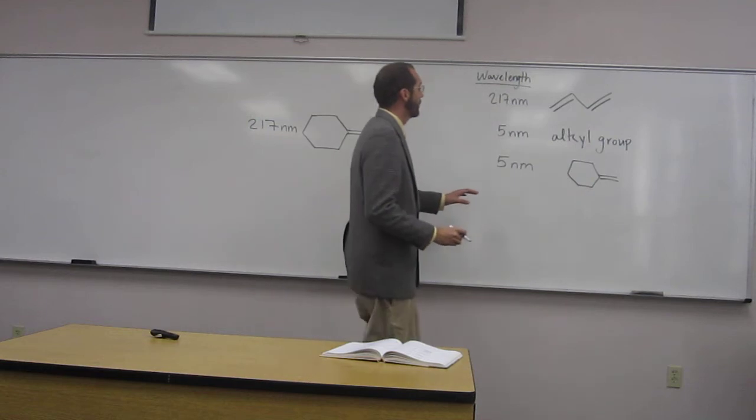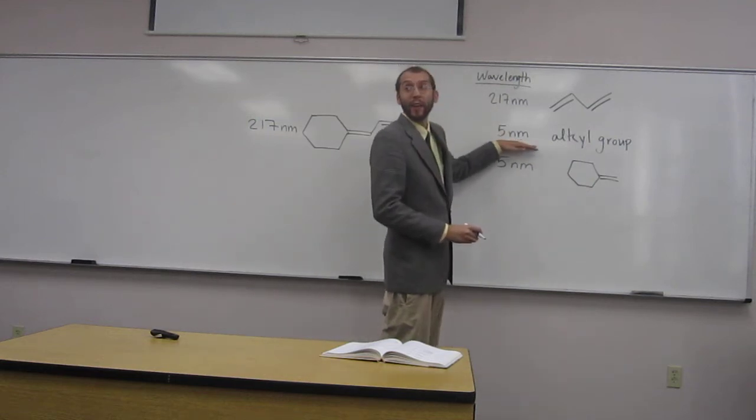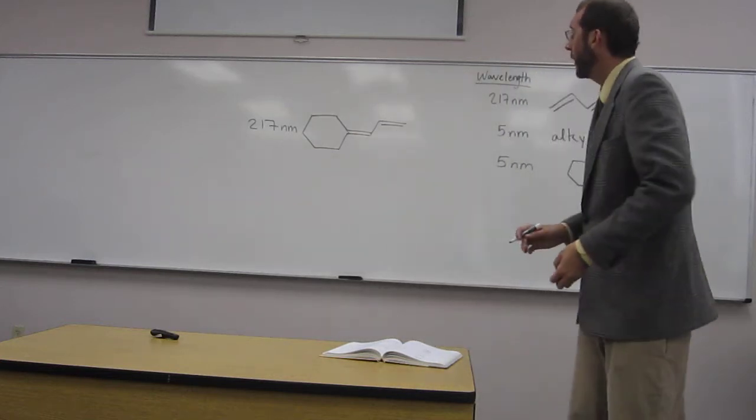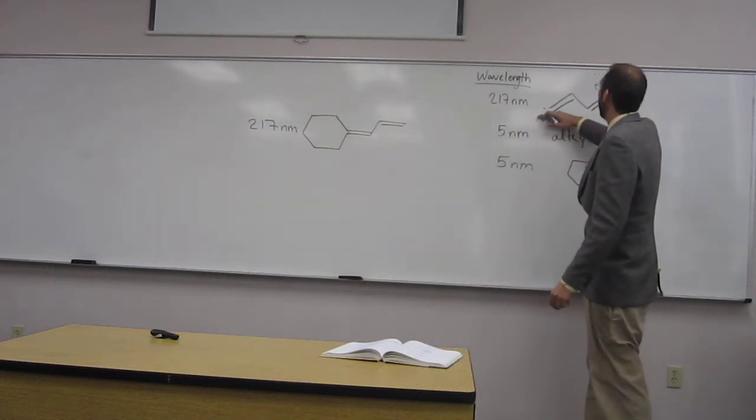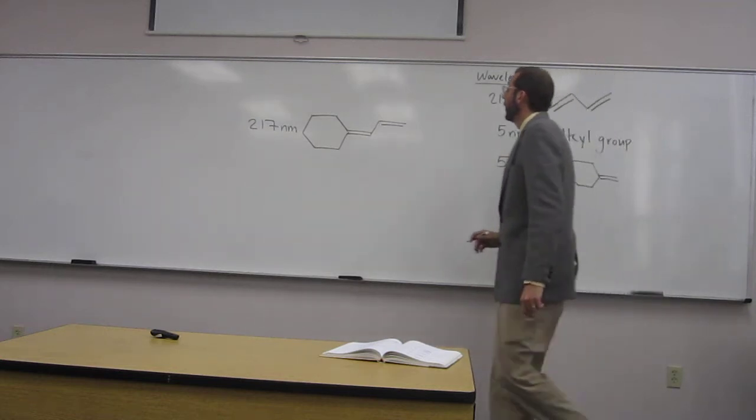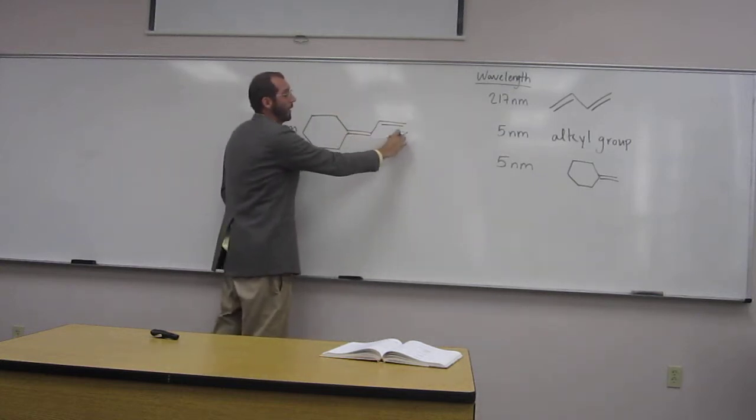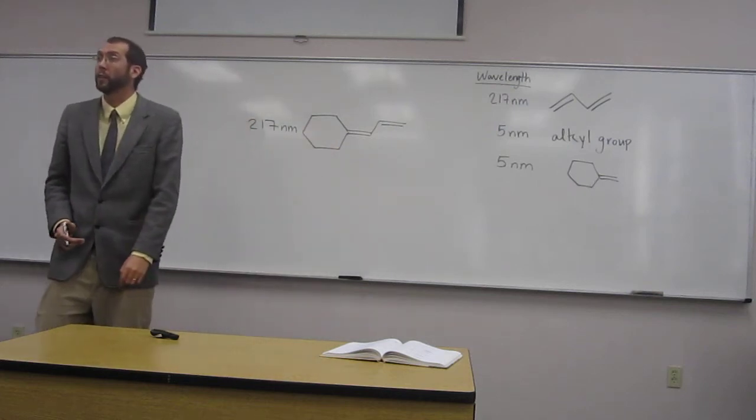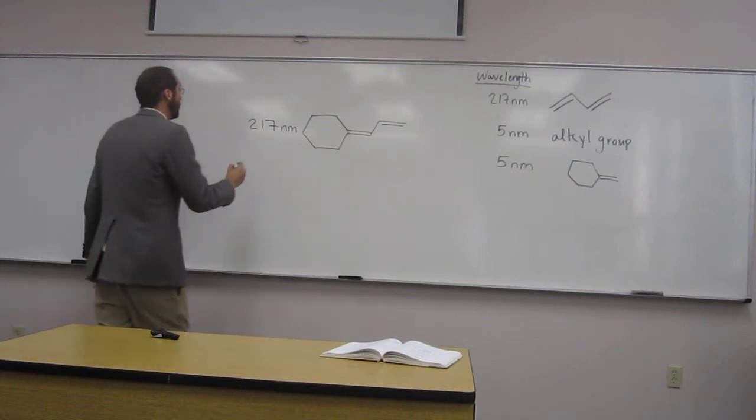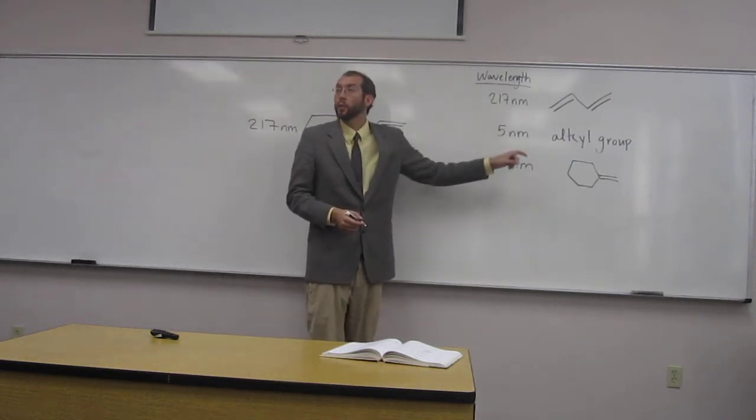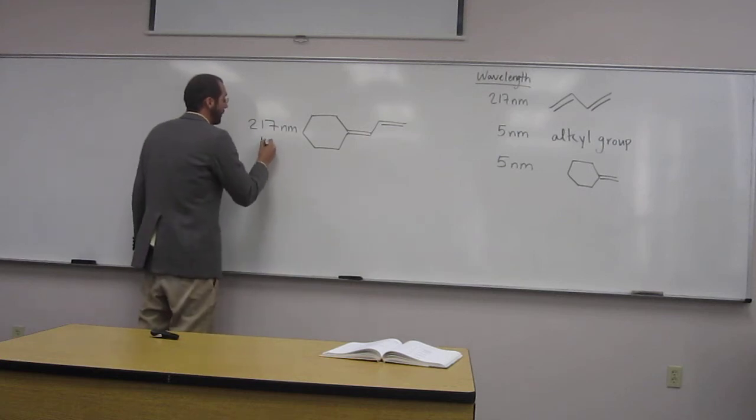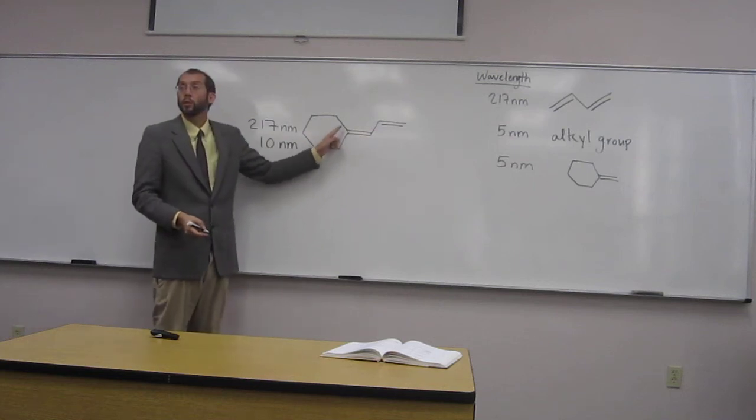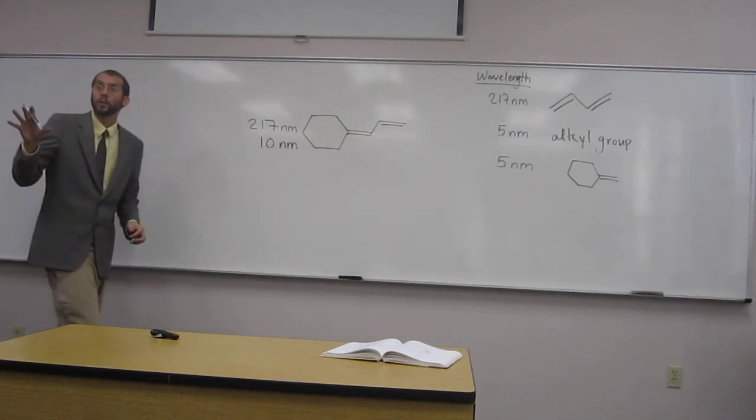You also see that it says add 5 nanometers for every alkyl group that is present on this system here. If we look here, there's that conjugated system, but we've got two alkyl groups on that conjugated system. Does everybody see that? So because we have two of them, it's going to be 2 times 5, which is 10 nanometers. That's attributable to those two alkyl groups there. Do you have any questions on that portion?